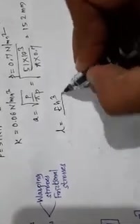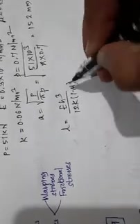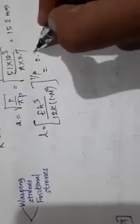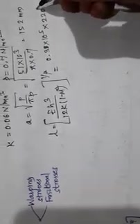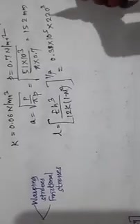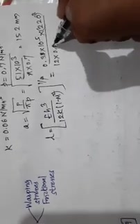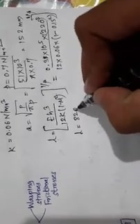Next is to find L. L is given by E h cubed divided by 12k times 1 minus mu squared, the whole raised to 1/4. E is 0.3 into 10 raised to 5. h is 220 mm. h cubed, raised to 3 divided by 12k, which is 0.06, into 1 minus mu is 0.15 squared. This whole raised to 1 by 4. If you simplify this, you will get L as 820 mm.